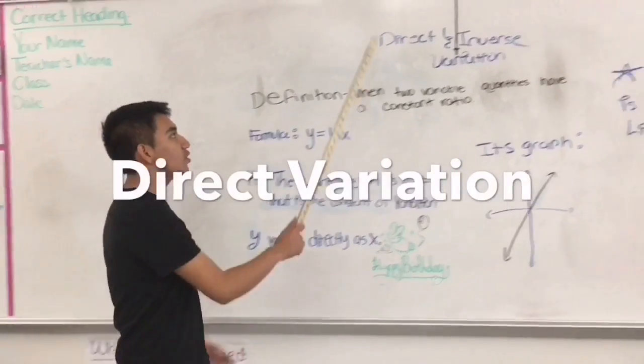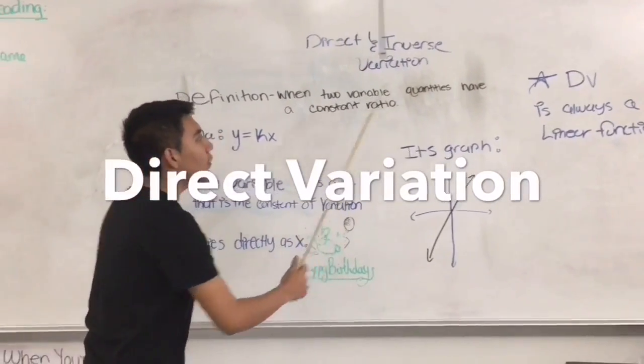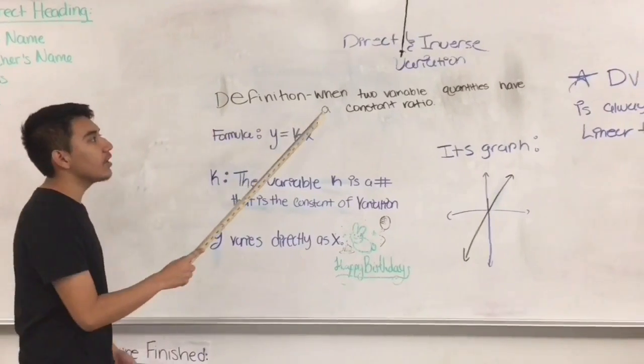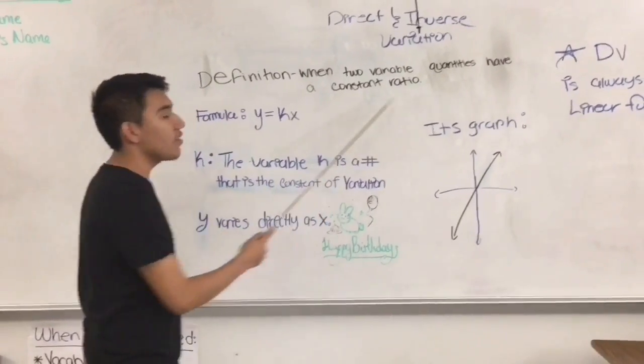The topic that we're about to discuss is direct and inverse variation. What I'm going to discuss is direct variation. The definition of direct variation is when two variable quantities have a constant ratio.